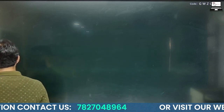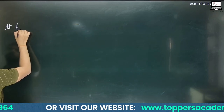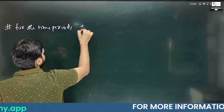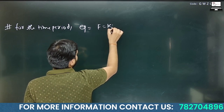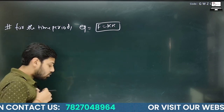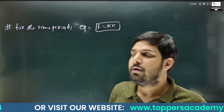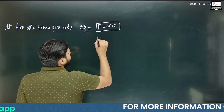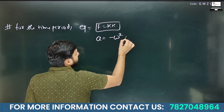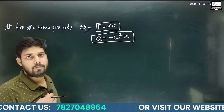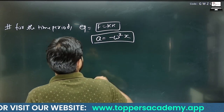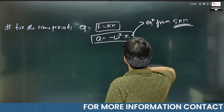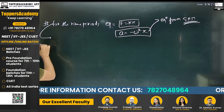To find the time period, we need an equation in the form F = kx, or equivalently acceleration = −ω²x. This is the basic SHM — simple harmonic motion — equation. Let's form this equation for the charge.